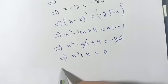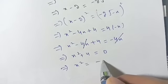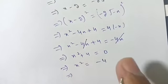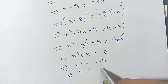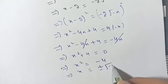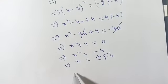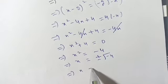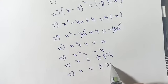Now we further solve: x squared is equal to minus 4. When we take the square root on both sides, it becomes x is equal to plus or minus root of minus 4.